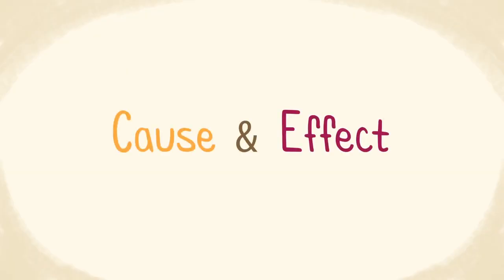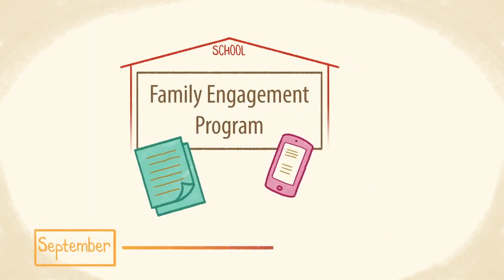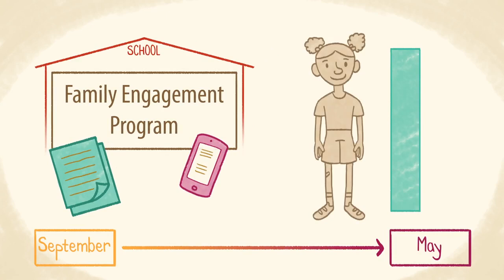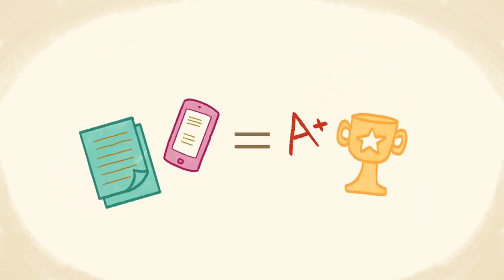Isolating cause and effect is a key challenge for researchers studying the effectiveness of a program or policy. For example, imagine a school implements a new family engagement program in the fall. That spring, academic achievement increases for students whose families participated in the program. Based on this information, is it safe to conclude that the program caused the improvement?